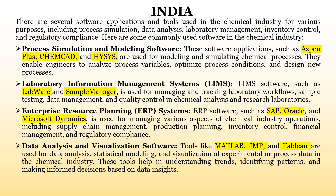The first one is process simulation and modeling software. Applications such as Aspen Plus, Kimcat, and ISIS help us to understand what kind of process will be running in a particular industry and what will happen during the process — for example, what happens if temperature or pressure is changed. These process simulation and modeling softwares are essentially design software used before constructing the whole plant to understand the total process.